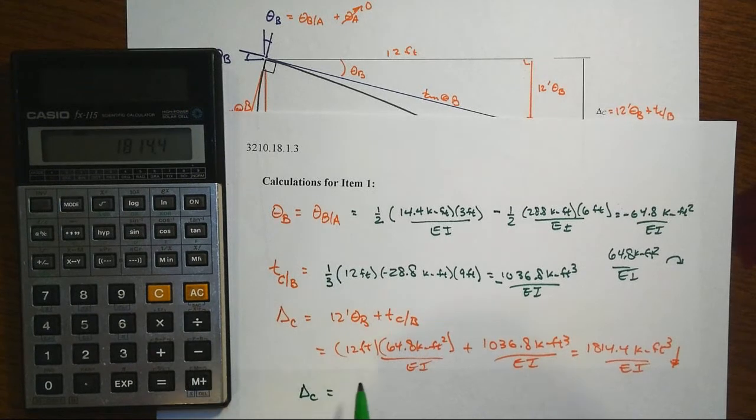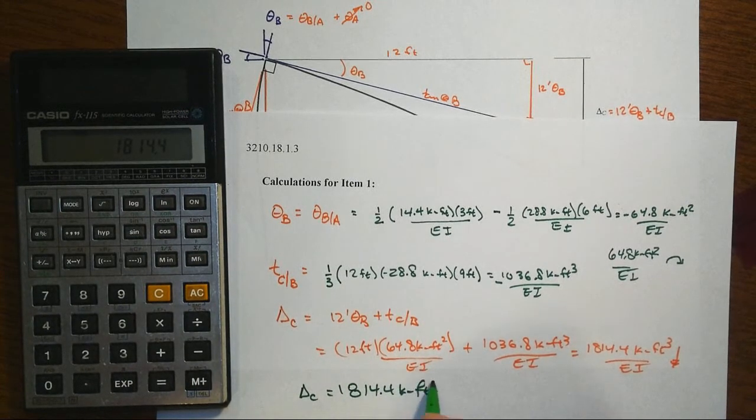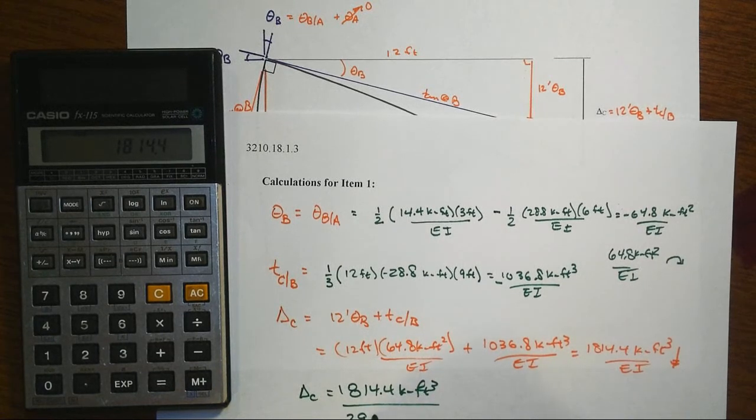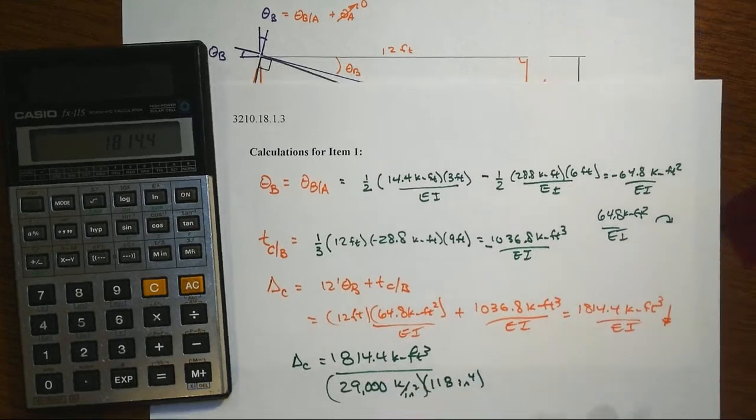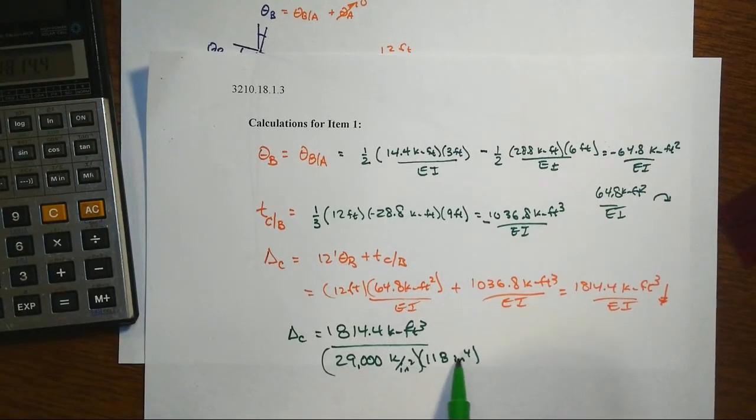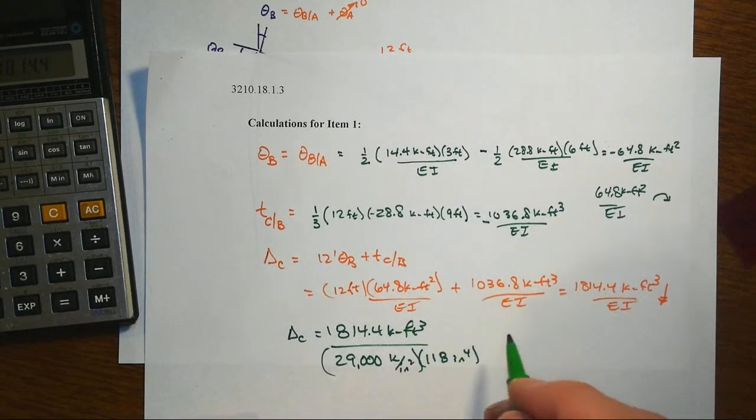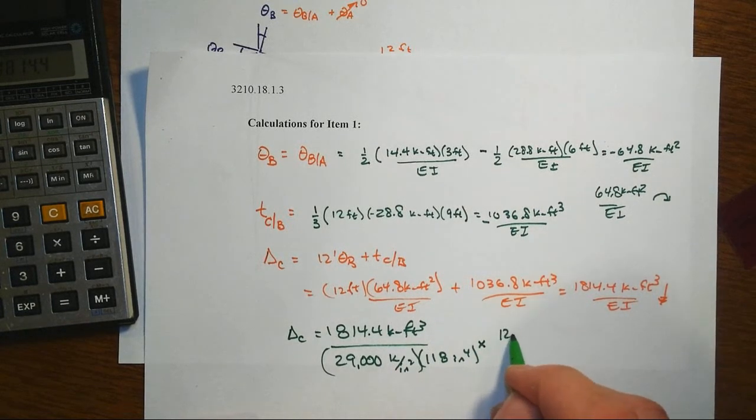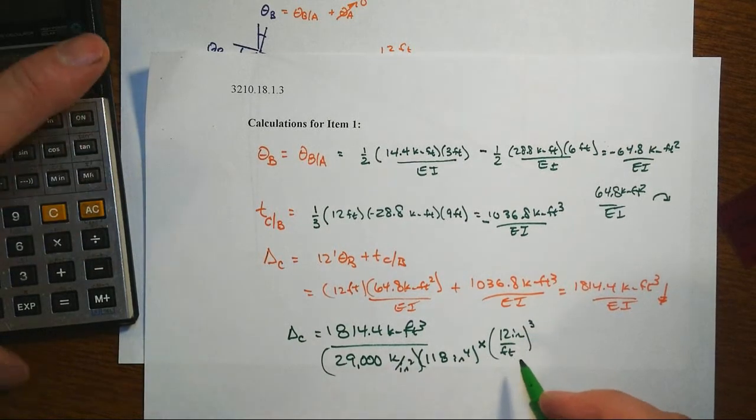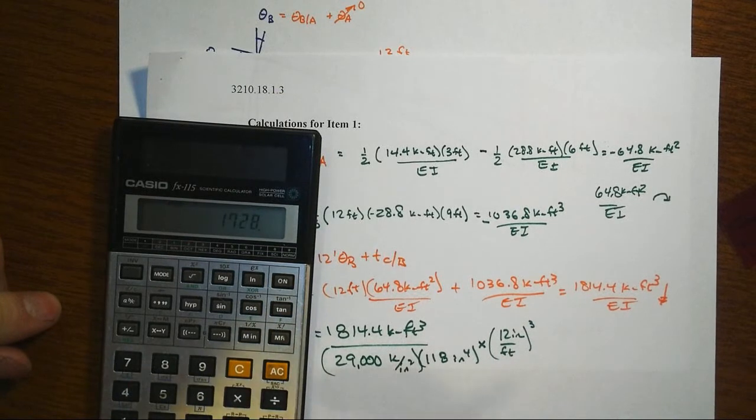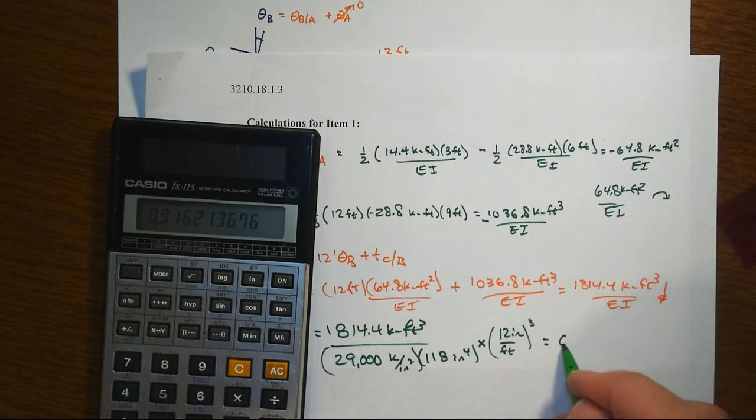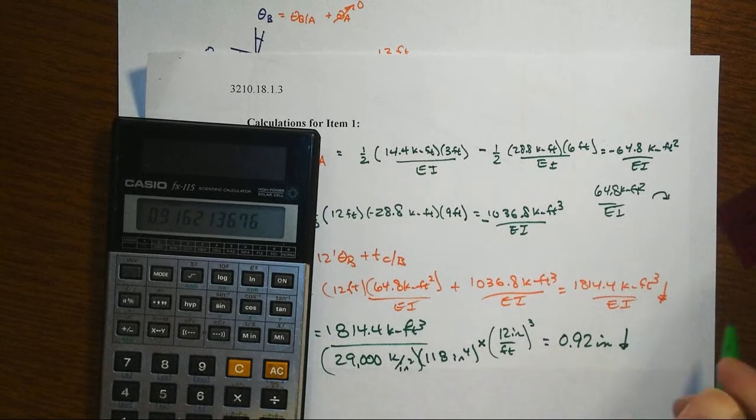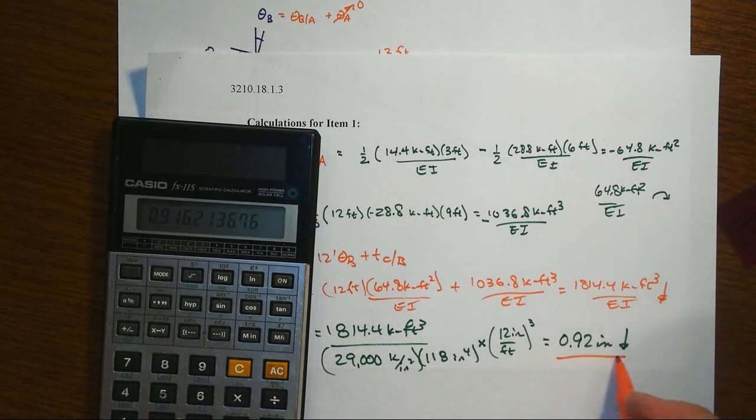So delta C equals 1814.4 kip foot cubed divided by 29,000 kips per square inch times the second moment of area of 118 inches to the fourth. Oh dear, we've got then in the denominator kip inch squared total, and we've got kip foot cubed up in the top. So let's take 12 inches per foot, cube the whole thing. That'll be 1728 is what that's going to be, divided by 29,000, divided by 118, and we get then 0.92 inches going downwards for the answer that has been requested.